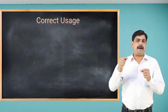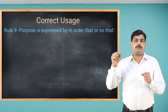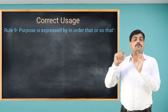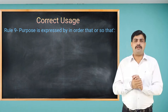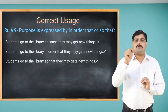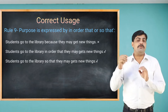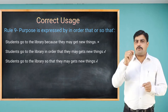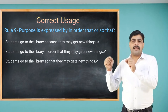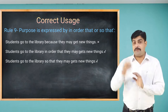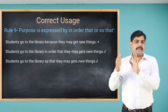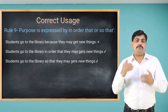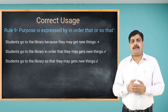Purpose is expressed by 'in order that' or 'so that', not by 'because'. For example, 'Students go to the library because they may get new things' is wrong. The correct sentences are: 'Students go to the library in order that they may get new things' or 'Students go to the library so that they may get new things.'